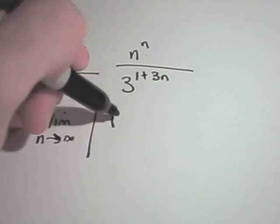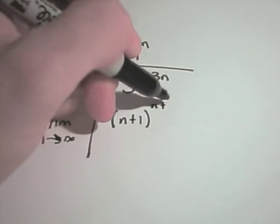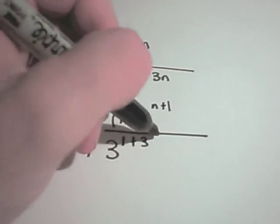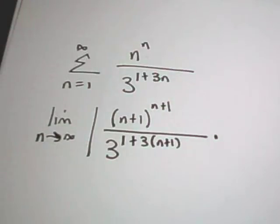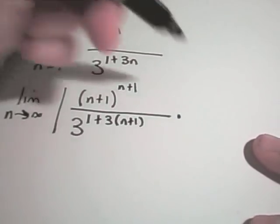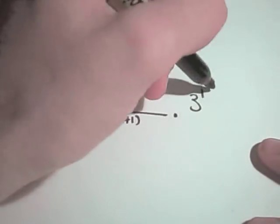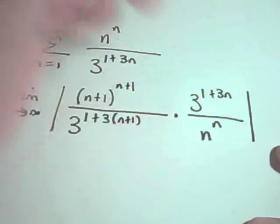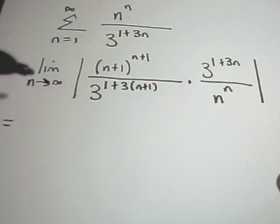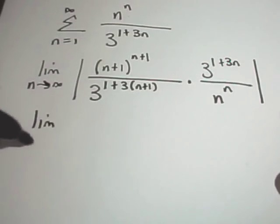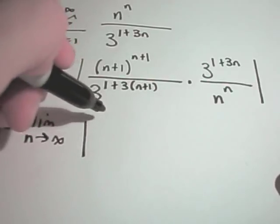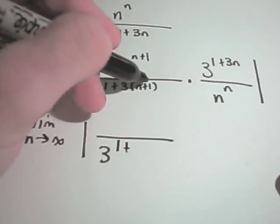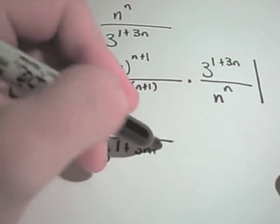So again, everywhere there's an n, I'm going to replace it with n plus 1. So in the denominator, I'm going to have 1 plus 3 times n plus 1. And then I'm going to divide it by the flip of the original, 3 raised to the 1 plus 3 to the n power, and then I've got n raised to the n power. All right, so let's clean this up here a little bit. I have the limit as n goes to infinity. In the denominator, I'm going to have 3, 1 plus, it looks like 3 to the n plus 3, when I multiply that out.